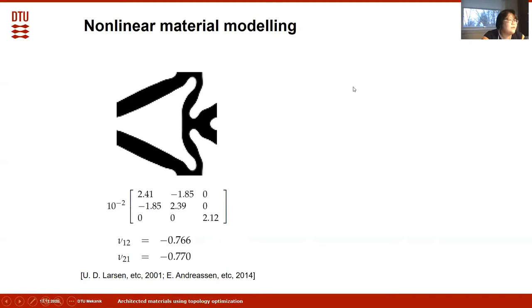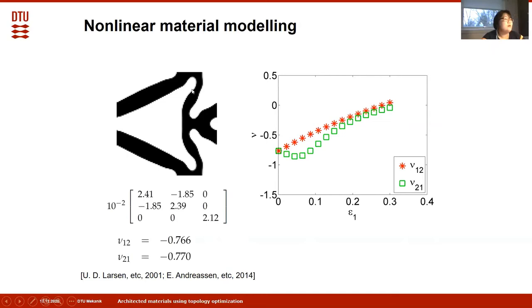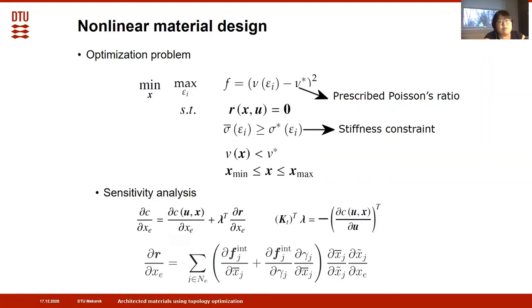I used this macro-structure model to evaluate the well-known fishbone negative Poisson ratio design, which was obtained from linear elasticity and is close to isotropic. This graph shows the Poisson ratio profile of this material: when considering finite strains and stretching up to 30%, the Poisson ratio shows highly nonlinear behavior with respect to strain. In the coming part, I formulate an optimization problem to design a material that shows a constant Poisson ratio.